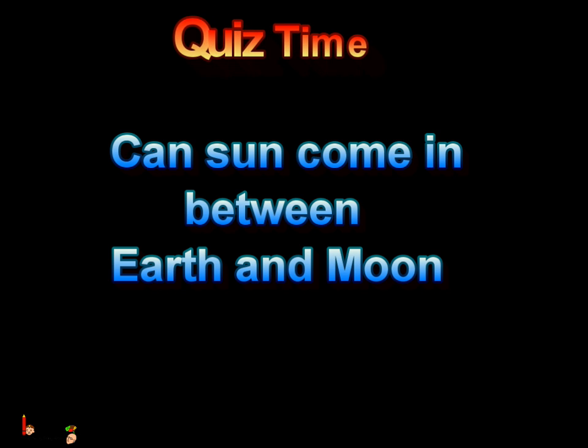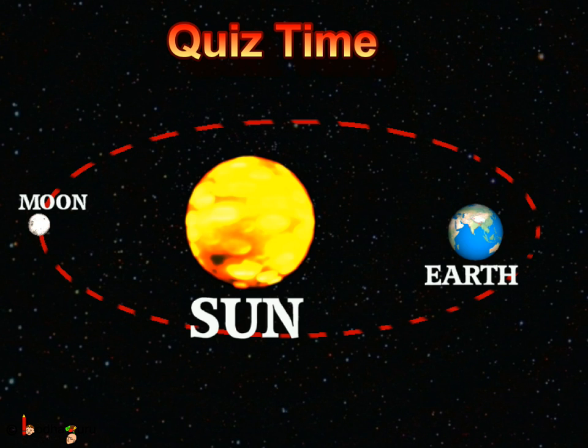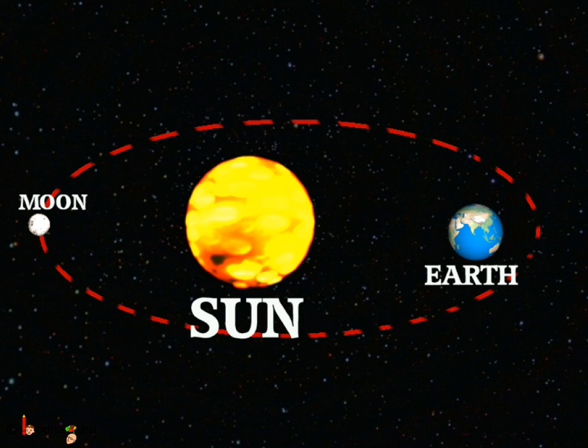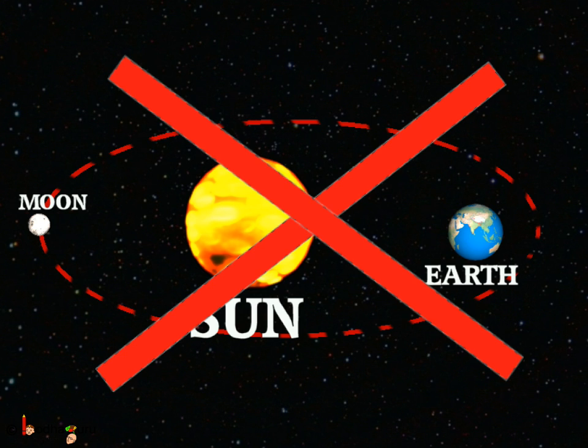Now this is an interesting question. Is it possible that Sun can come in between the Earth and the Moon? Think! How Earth is revolving around the Sun and how Moon is revolving around the Earth? Draw it on paper and see, is it possible? No, it is not possible.